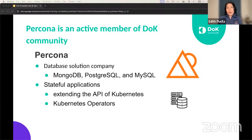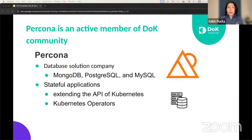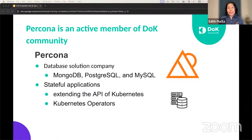As a database solution company, Percona works with different databases like MongoDB, PostgreSQL, and MySQL. When we use databases, we talk about stateful applications that need to keep safe and secure our data. With Kubernetes, we deployed a database and it became a challenge, because Kubernetes was initially designed for stateless applications, not for stateful applications like databases.